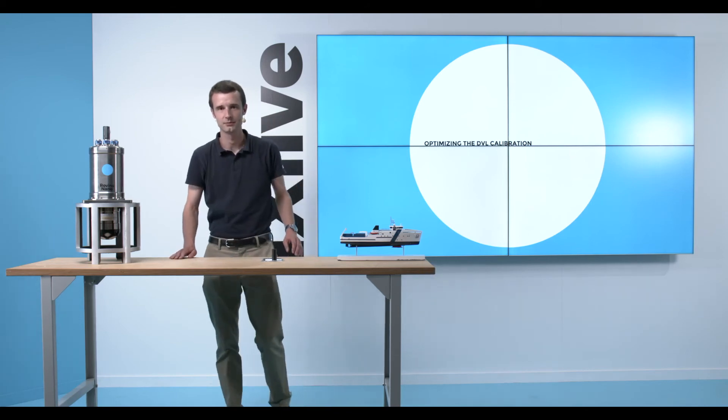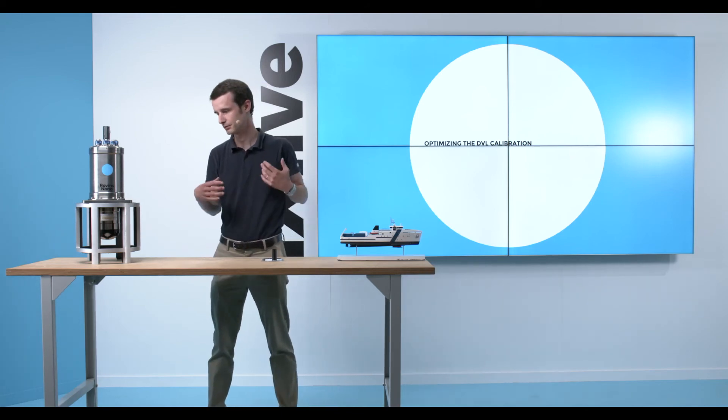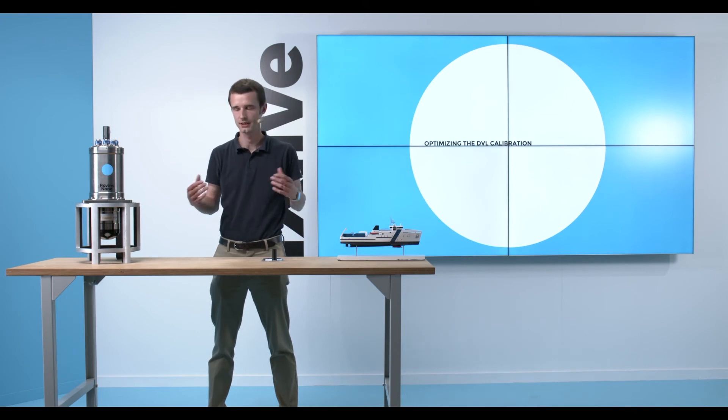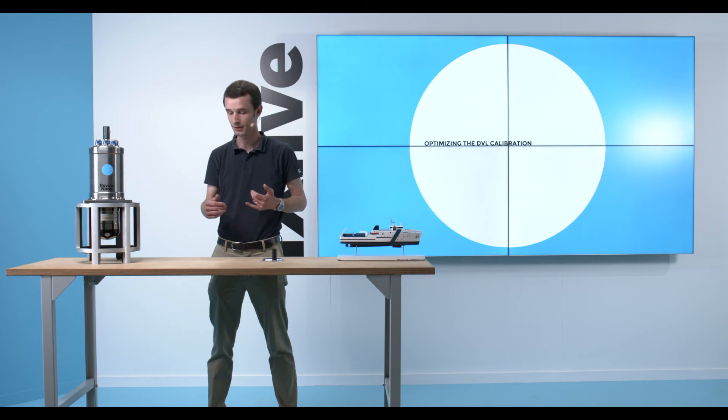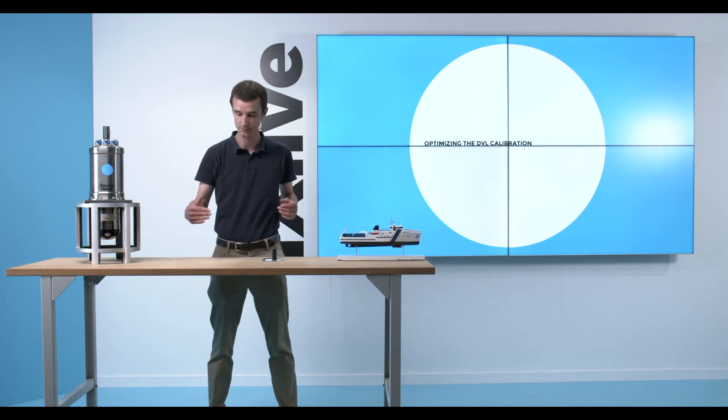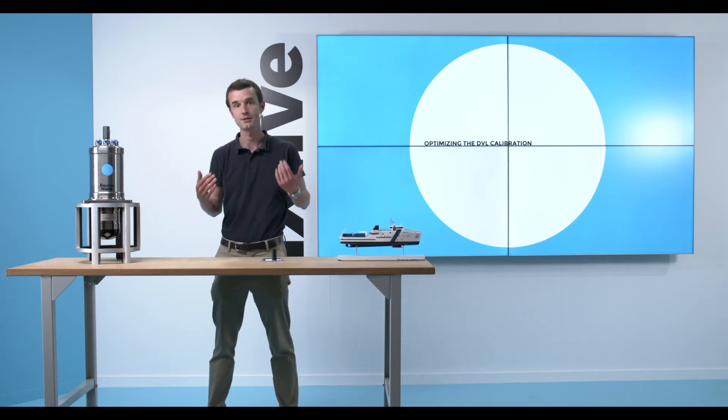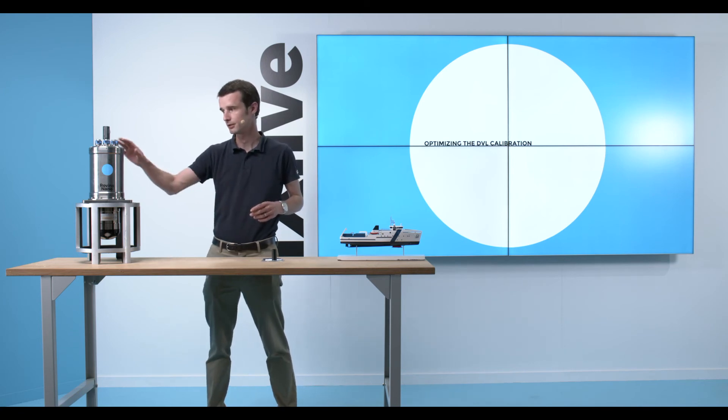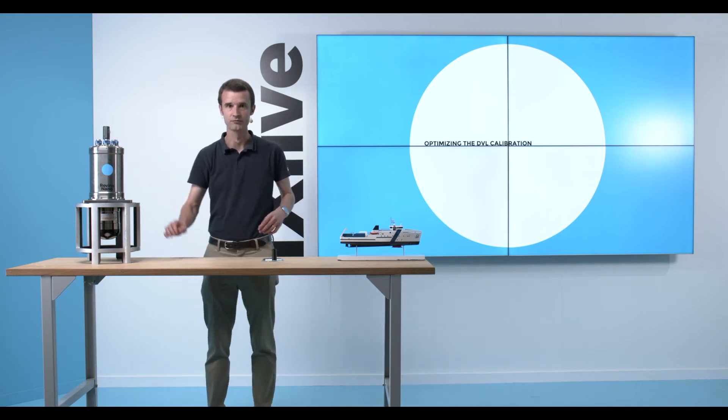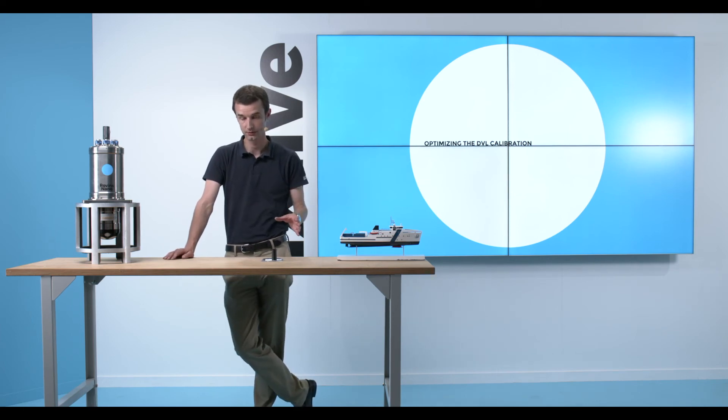Optimizing the DVL calibration. There's a few things we can do to optimize further the DVL calibration procedure. I'd like to show you three of them. The first one would be the speed of this calibration procedure. I strongly encourage you to go around five to six knots constant speed on your calibration line. This will allow you to measure a better scale factor from the INS computation.